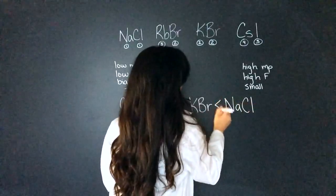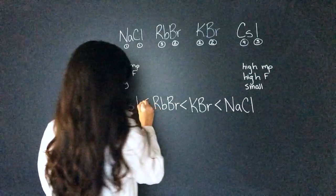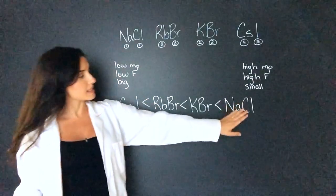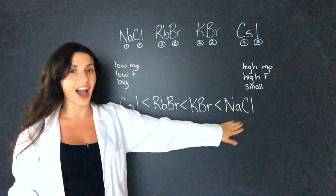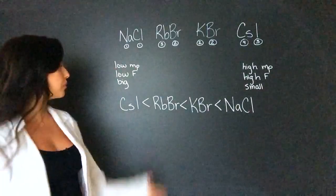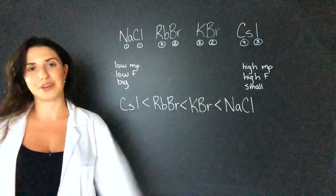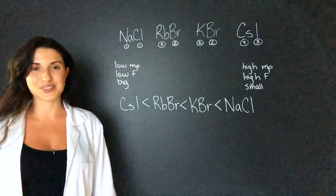Then I would put the arrows like this. Remember this is the smallest ion but the highest melting point. So now I've ordered them from low melting point to high melting point. And I get my answer right.